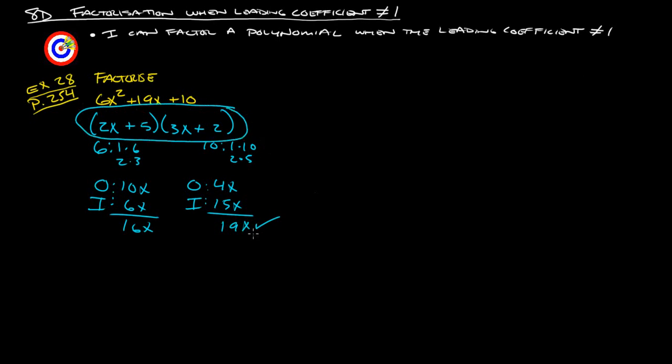Let's just say this had not worked. If this did not work out to be 19x, then what you would want to do is take a set of the factors out and switch them with, say, the 1 and the 6 or the 1 and the 10. But it did happen to work, so we don't have to worry about that.